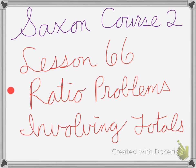Saxon Course 2, Lesson 66 on Ratio Word Problems Involving Totals. First I have the ratio of boys to girls at the assembly was 5 to 4. If there are 180 students in the assembly, how many girls were there?